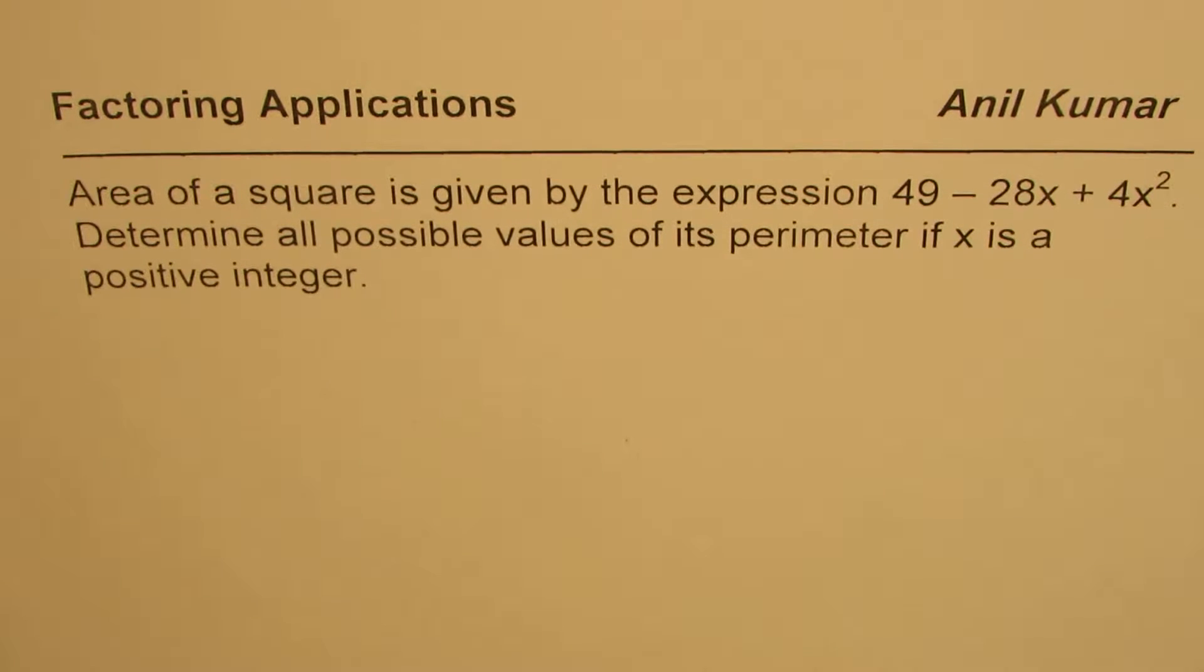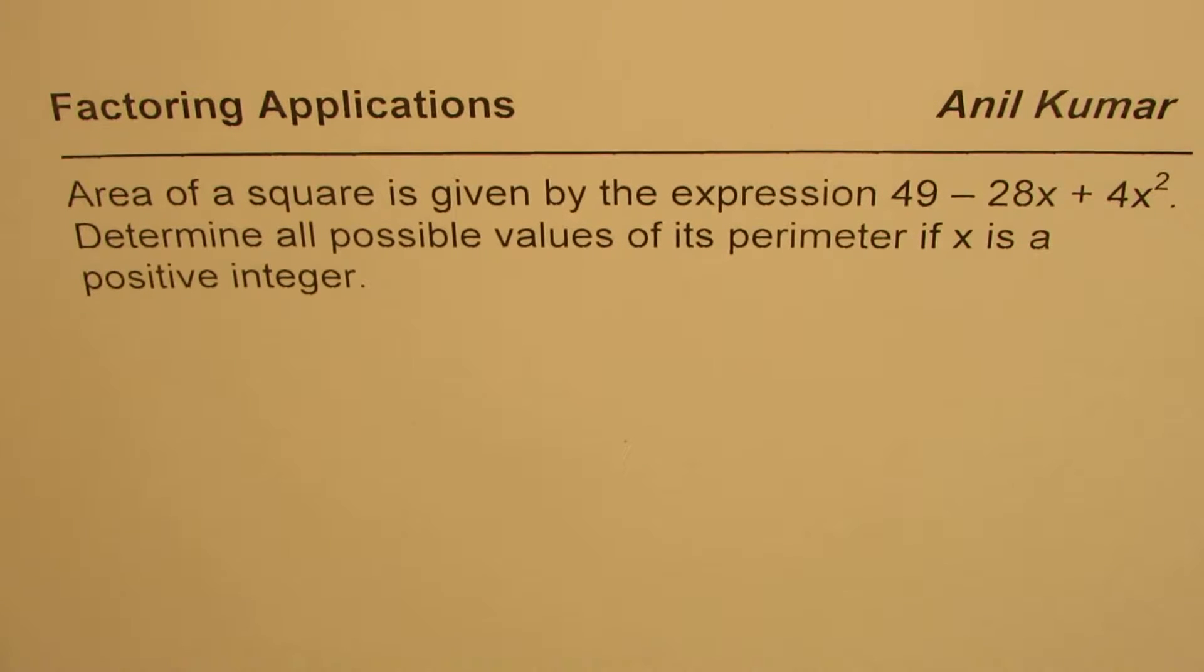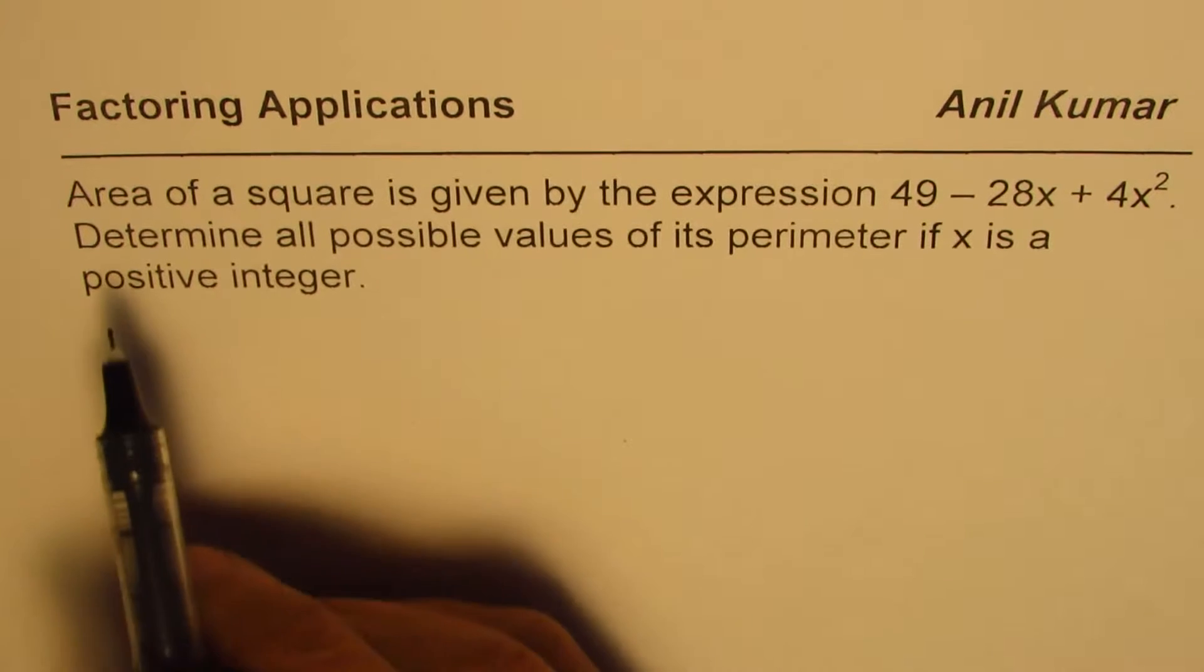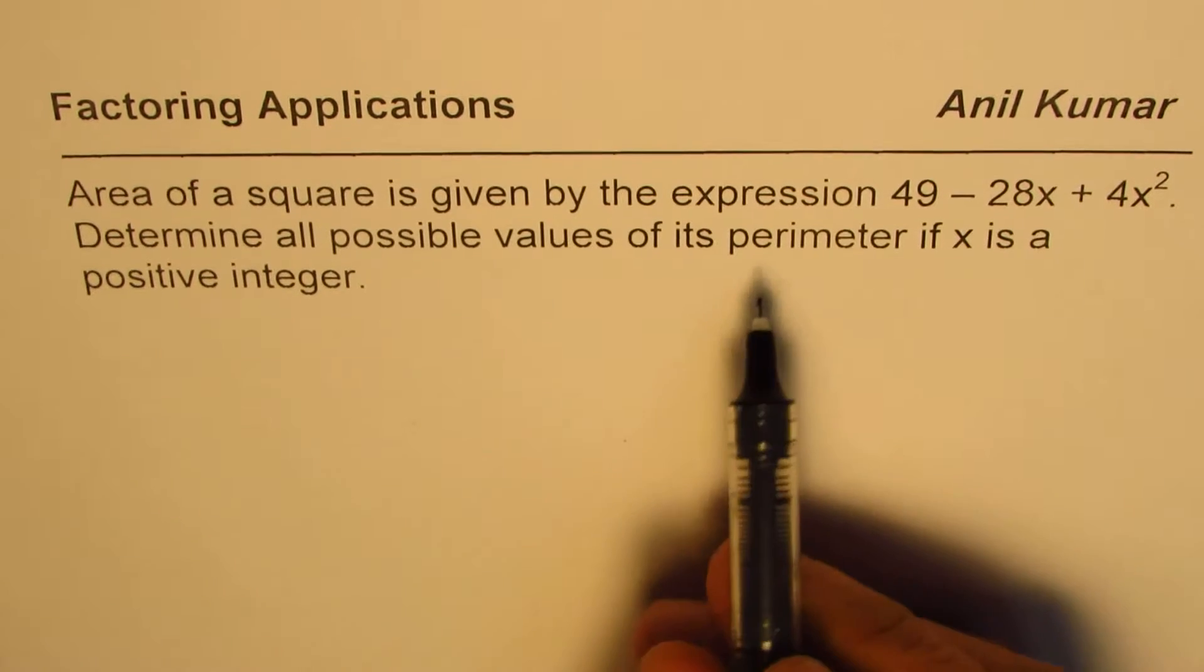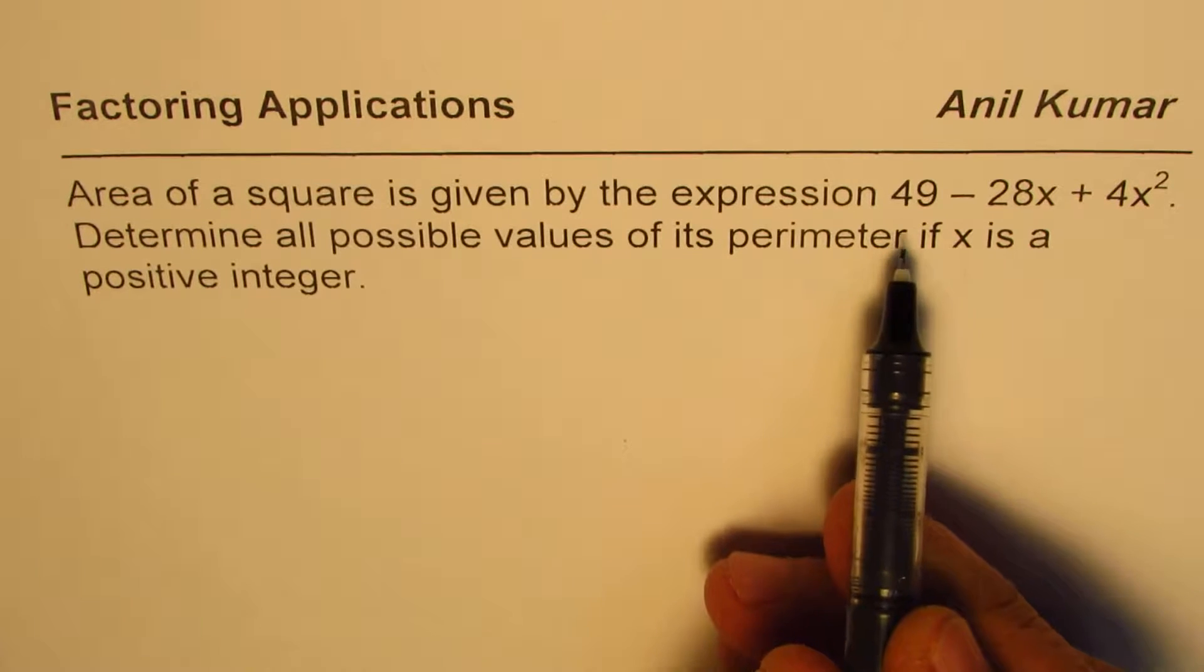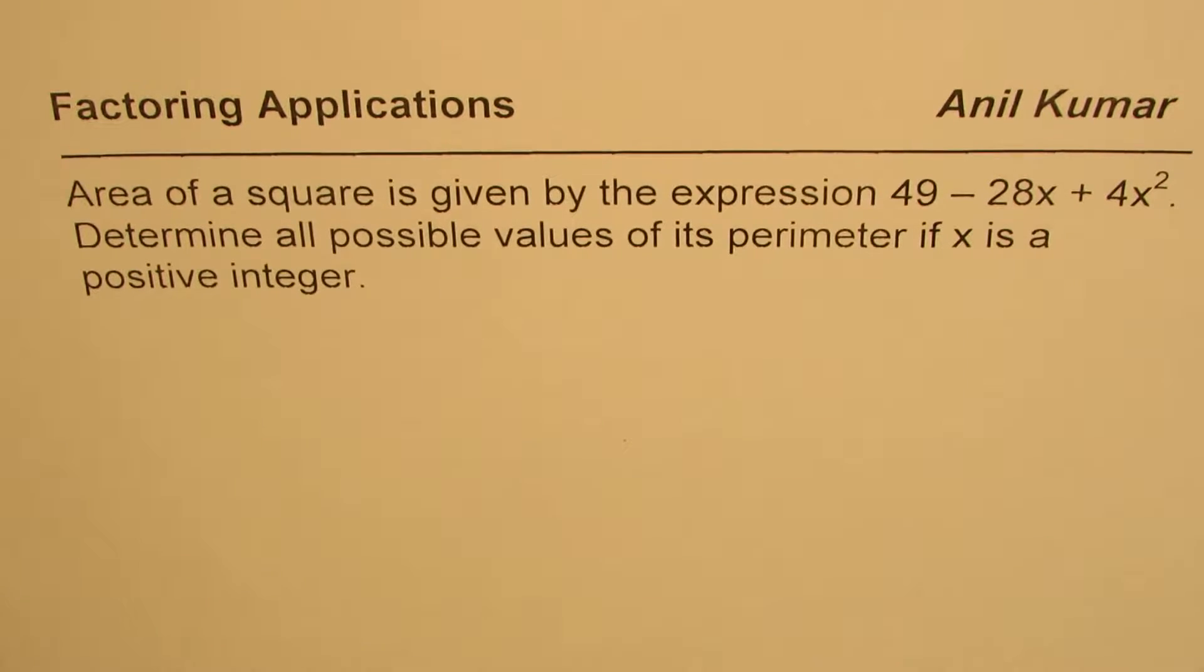I'm Anil Kumar sharing with you an excellent question on factoring applications. Area of a square is given by the expression 49 minus 28x plus 4x squared. Determine all possible values of its perimeter if x is a positive integer.